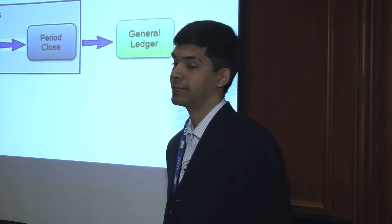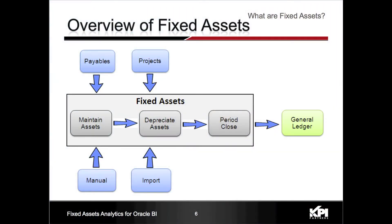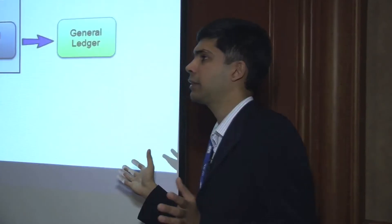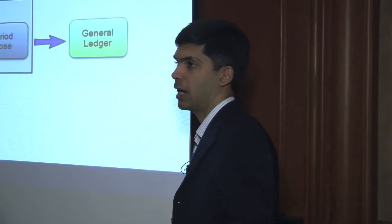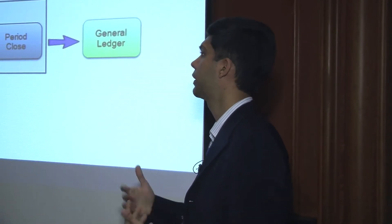Let's take a look at the overview of fixed assets in terms of data flow. The blue boxes are the different modules in an ERP system — those are the modules which feed data into my fixed assets. The gray box is the actual fixed asset module. Information flows into fixed assets from payables and projects; you could key in assets manually or import assets from a third-party system. Once data gets into fixed assets, various activities occur — you maintain, depreciate, and retire your assets. Just like any other subledger, all this information flows to your general ledger. Fixed asset is a standard subledger module, just like AR or AP.